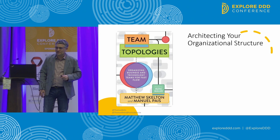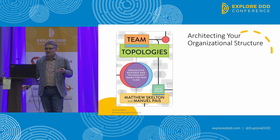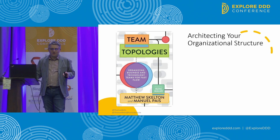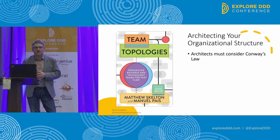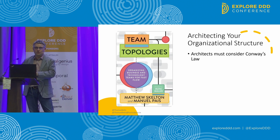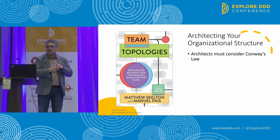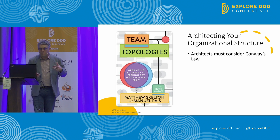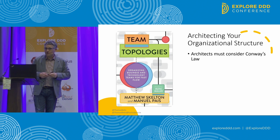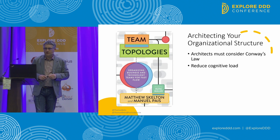I think it's like the third person to have Team Topologies on their slides. Architects can no longer only deal with technical issues — you have to think about the socio-technical interactions. Team Topologies embraces Conway's Law and says you need to either adapt your architecture to fit your organizational structure, or do that reverse Conway maneuver and say this is the way the architecture needs to be built, so we need to move our teams around.